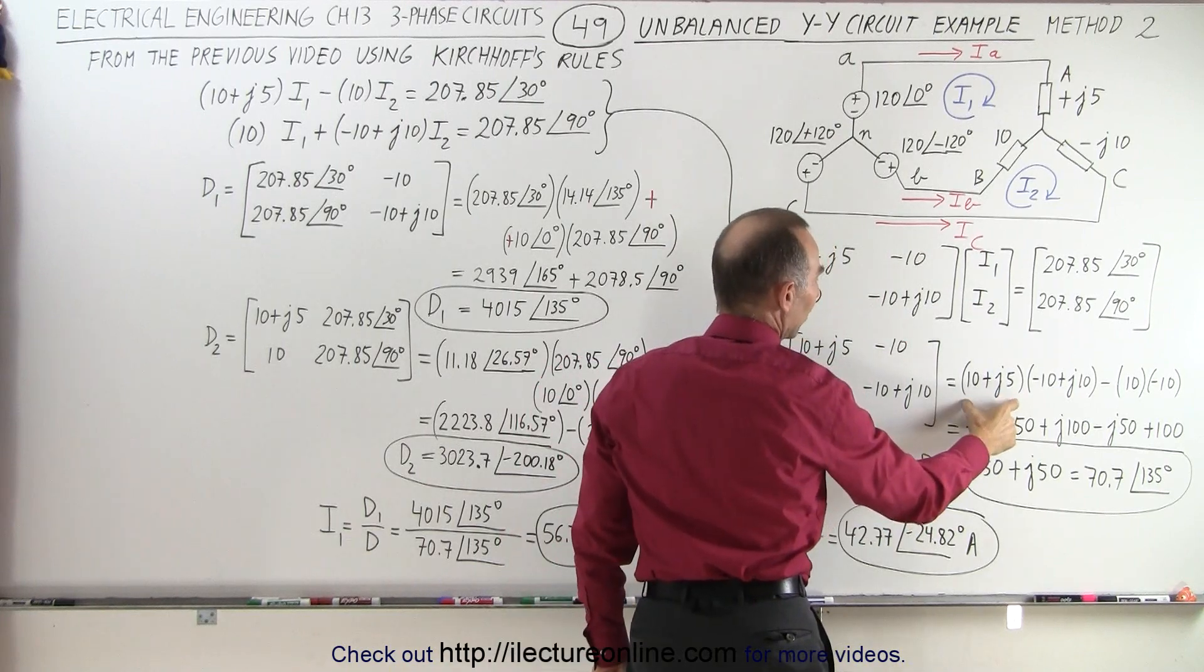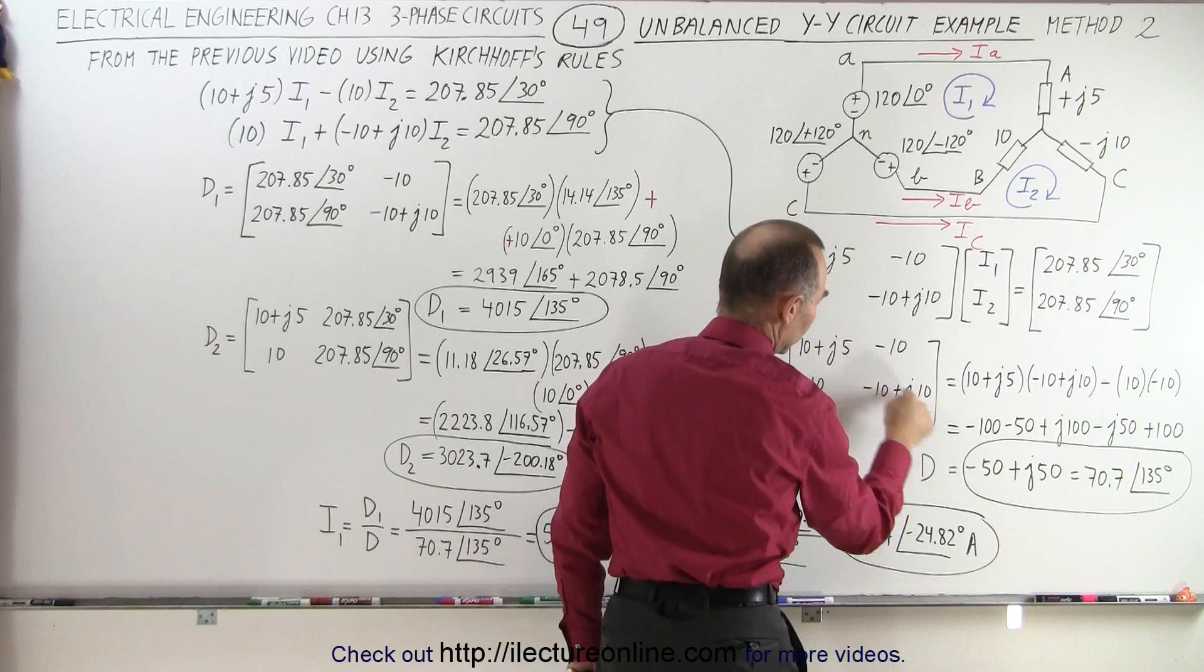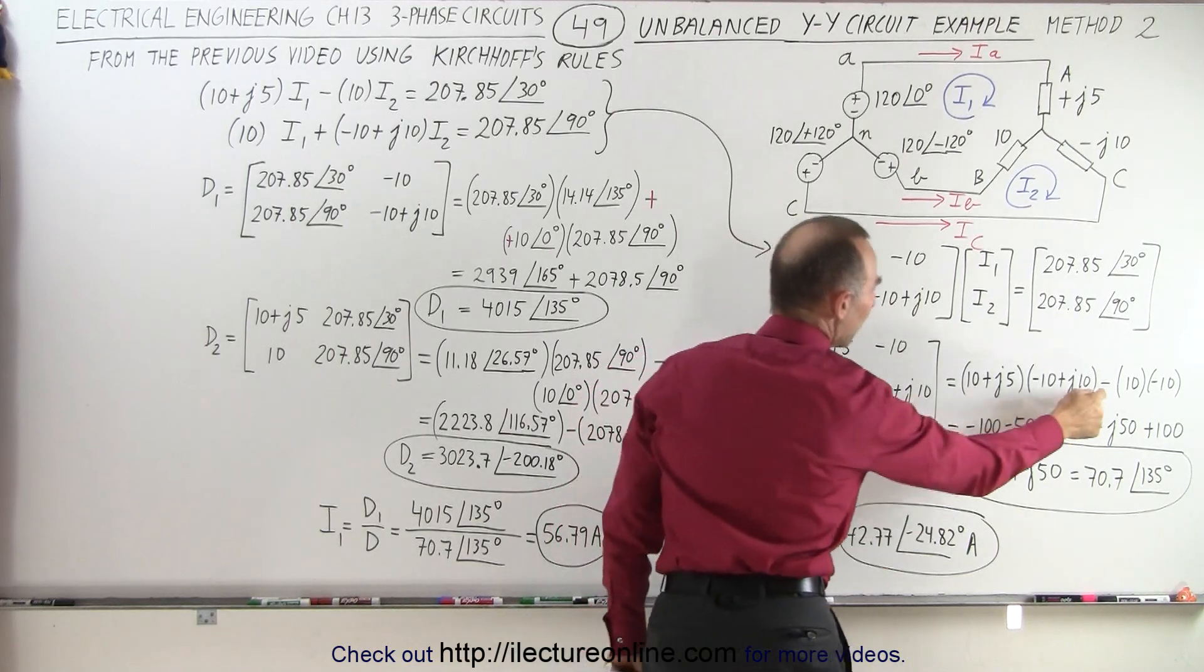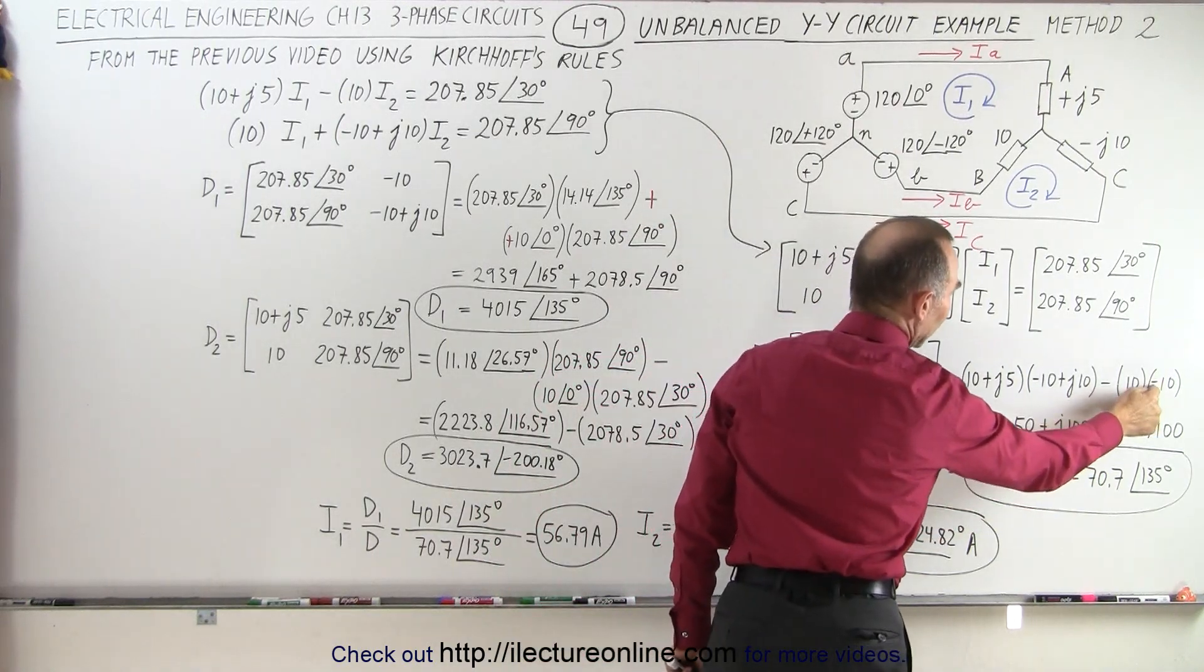So we have 10 plus j5 multiplied times minus 10 times j10. Those two cross elements multiplied together minus these two cross elements multiplied together. Notice that this minus cancels out.